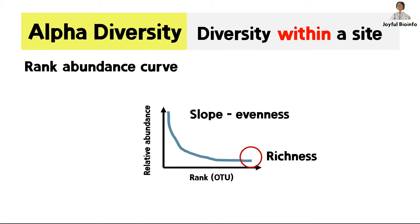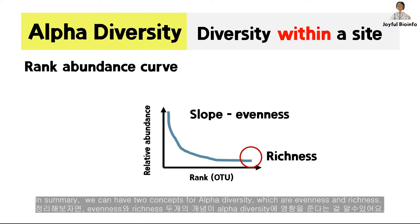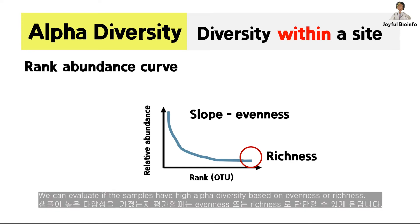In summary, we can have two concepts for alpha diversity, which are evenness and richness. We can evaluate if the sample has high alpha diversity based on evenness or richness.